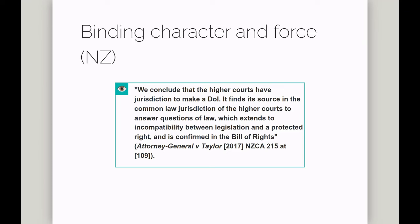Similar possibilities are found in other jurisdictions. In New Zealand, the power of courts to make a declaration of incompatibility isn't found in primary legislation but has been created by the courts themselves. The New Zealand Court of Appeal, in Attorney General v. Taylor, wrote that higher courts have jurisdiction to make a declaration of incompatibility, finding its source in the common law jurisdiction of higher courts to answer questions of law, which extends to incompatibility between legislation and a protected right.